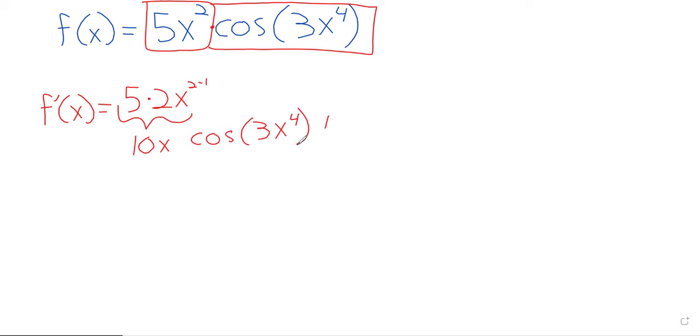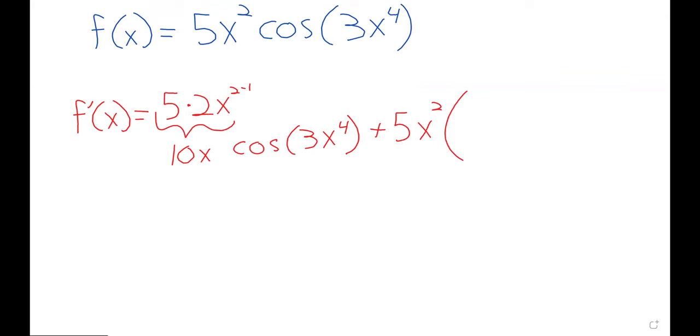And then we leave the other function alone. Plus, and now we leave the 5x squared alone, but we take the derivative of the cosine.